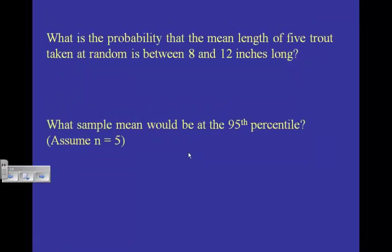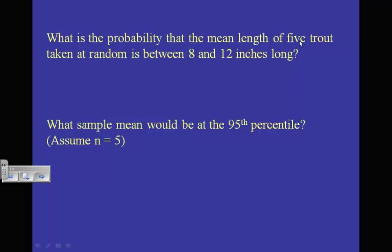What's the probability that the mean length of 5 trout taken at random is between 8 and 12 inches long? Now we're not dealing with a single trout — we're dealing with 5 trout. So our sample standard deviation is no longer 1.4.